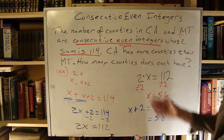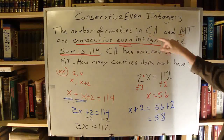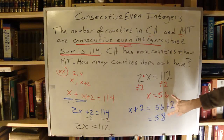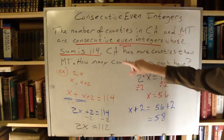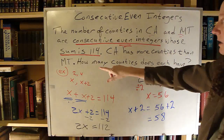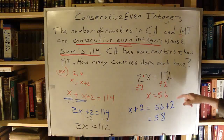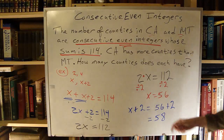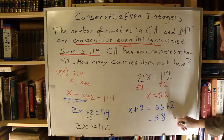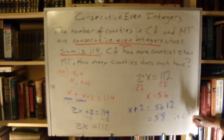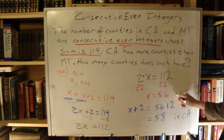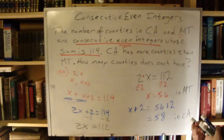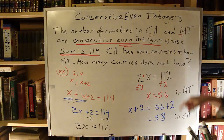Still not done — I have to re-read my problem. The number of counties in California and Montana are consecutive even integers whose sum is 114, so I found my two numbers: 56 and 58. California has more counties than Montana, and 58 is more than 56, so 58 is California and 56 is Montana.